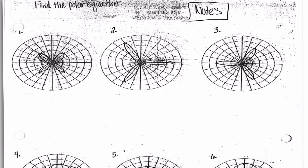Hey guys, it's Ms. Miklos, and today we are going to be talking about how to do the opposite. So previously to this, we've really focused on looking at equations, identifying what type of graph they are, and then graphing them appropriately. Today we're working backwards, so we're going to look at a graph and determine what it is, and then figure out what the equation should be. I personally think that this is easier than graphing, so let's get straight into it.